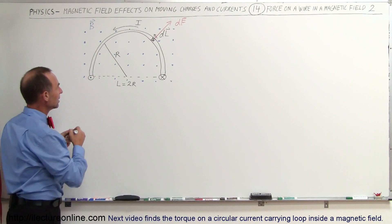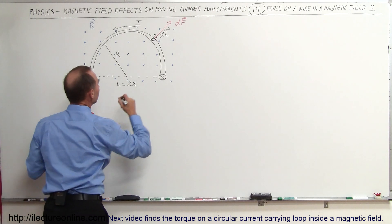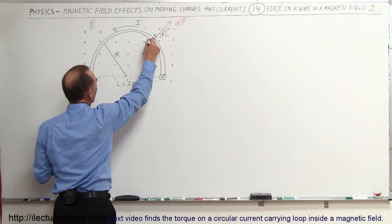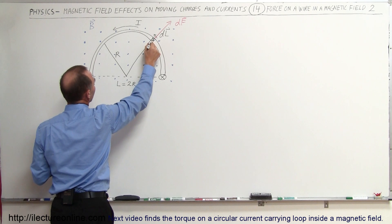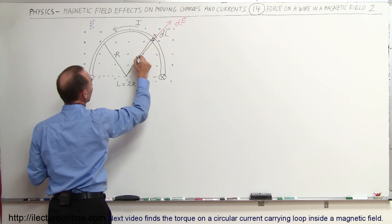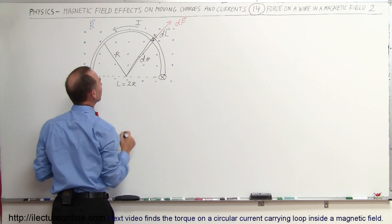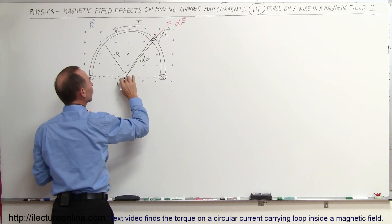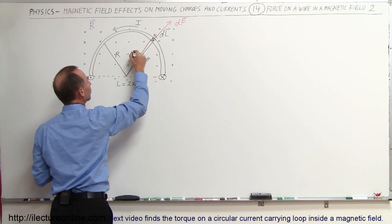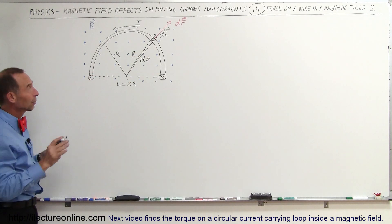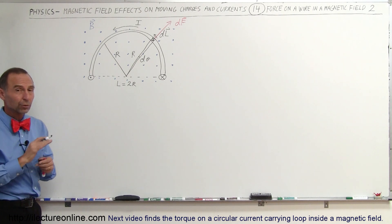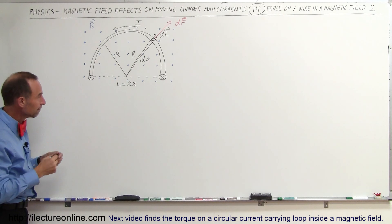Notice if we draw a line from the front end of that little DL segment and a line from the back end, this forms a very small angle called dθ. The distance from there to there we call R, and there's a reason we need that — because we're going to convert DL to R and theta.